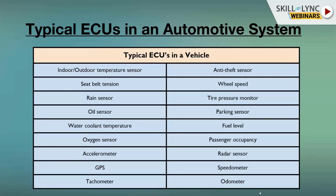There can be more than 100 different ECUs within a single car, each performing different functionalities. For example, some of the ECUs include: indoor/outdoor temperature sensors, seatbelt tension sensors, rain sensors, oil sensors, water coolant, accelerometer, tachometer, speedometer, passenger occupancy, fuel level, parking sensor, wheel speed, and odometer. Each of those sensors is connected to different ECUs, which read data from sensors and take particular actions based on the programmed software.